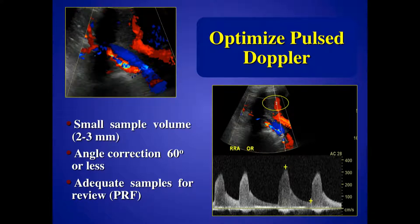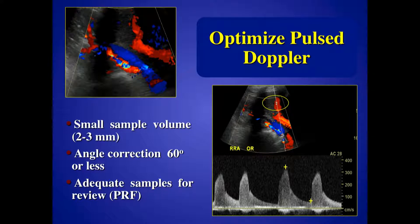Angle correction — always make sure it's 60 degrees or less. Make sure when you record those waveforms that you record the whole waveform and you're not aliasing. You want to increase your PRF so you can include the waveform on your tracing.